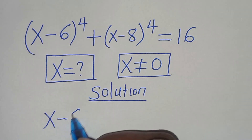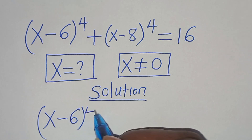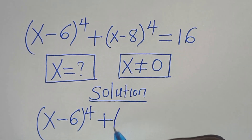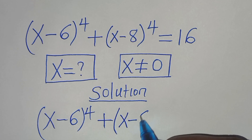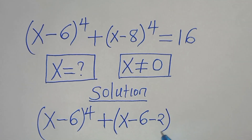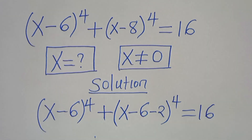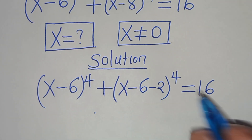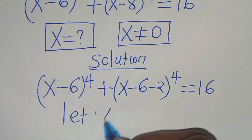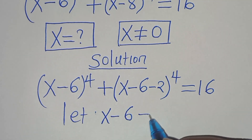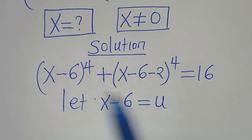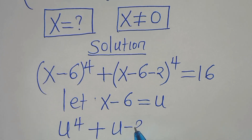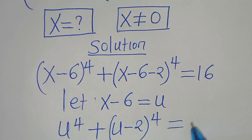We have x minus 6 to the power of 4, plus x minus 8 to the power of 4. We can express x minus 8 as x minus 6 minus 2, to the power of 4, and this is equal to 16. We can let x minus 6 be equal to u, substituting u into this equation, we have u to the power of 4, plus u minus 2 to the power of 4, equal to 16.